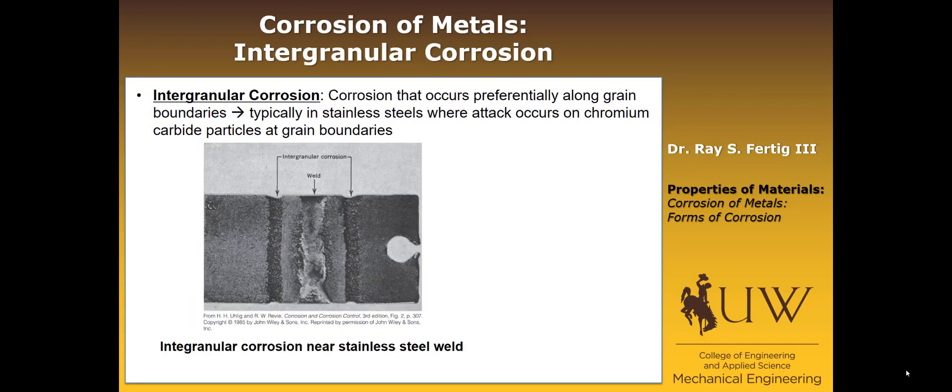Another form of corrosion is called intergranular corrosion — corrosion that occurs preferentially between the grains, along the grain boundaries. This is usually a problem for stainless steels, because there is a corrosive attack on the chromium carbide particles that can exist at the grain boundaries. That can occur because of heat from a weld, and what you're looking at in this picture is exactly that — a stainless steel weld where near the weld there was a region where chromium carbide particles were highly concentrated.